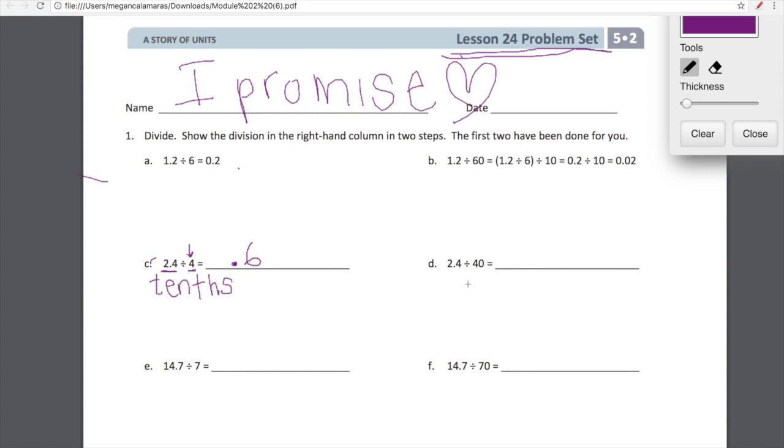Now let's go over here where the expression has changed slightly. Now the expression is 2.4 divided by 40. Today we worked on decomposing 40. We're going to decompose 40 into 10 and 4. I feel like you guys are pretty comfortable with this by now. So we're going to rewrite our expression as 2.4 divided by 10 divided by 4.